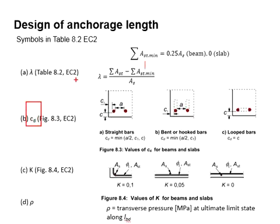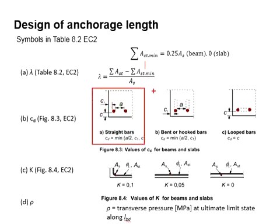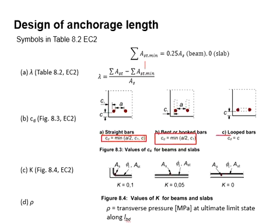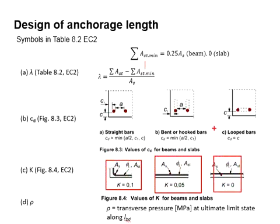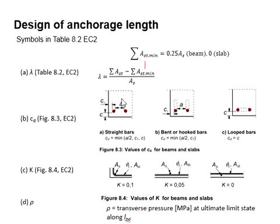CD refers to figure 8.3, which illustrates a straight bar, a bent or hook bar, and a loop bar. CD is determined by equations referring to this diagram. The value K refers to figure 8.4 and varies from 0.1, 0.05, and 0, depending on different conditions. Rho represents the transverse pressure in MPa at the ultimate limit state along Lbd.